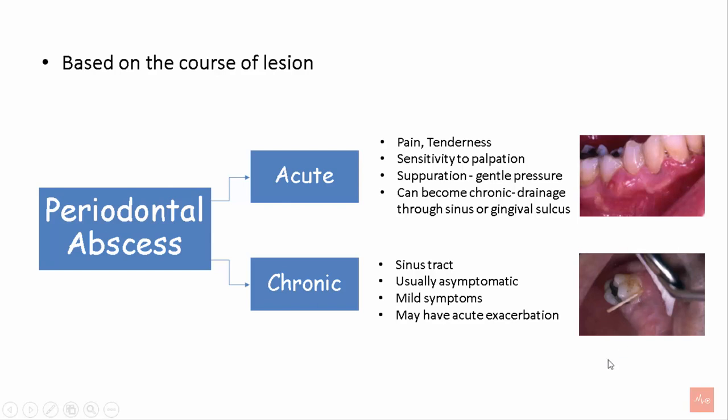Chronic periodontal abscesses are basically asymptomatic and associated with very mild symptoms; however, they can have an acute exacerbation.